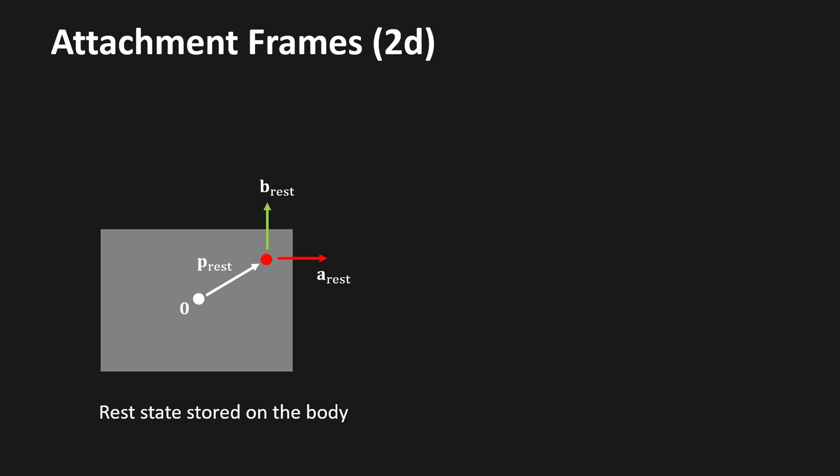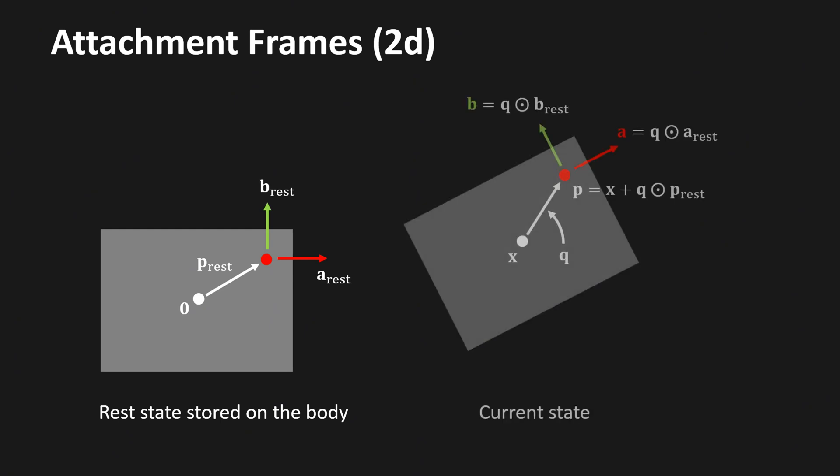To handle all joints we need attachment frames. An attachment frame is composed of a location p-rest and a set of perpendicular axes a-rest and b-rest, defined in the rest state of the bodies. Before solving a constraint, we transform these into world space using the current position x and rotation q of a body. The current attachment point is x plus p-rest rotated by q, and the current axes are the rest axes rotated by q.